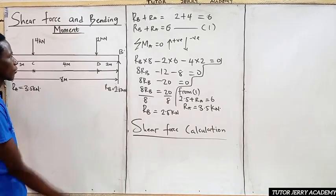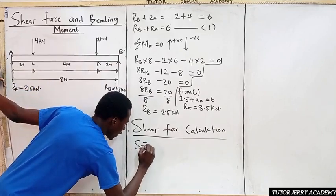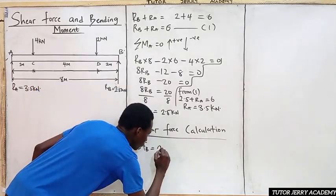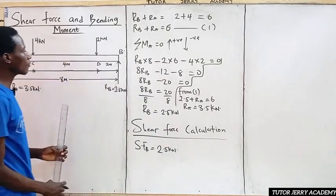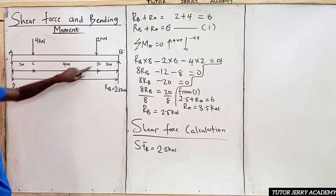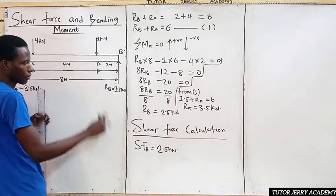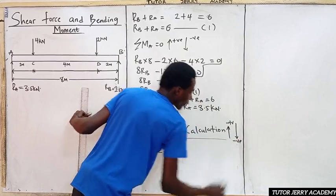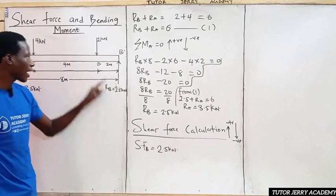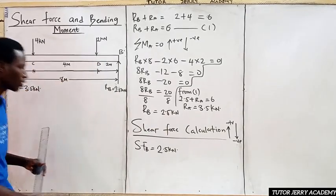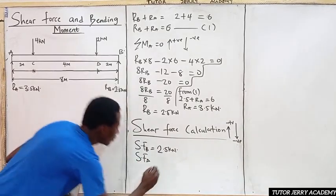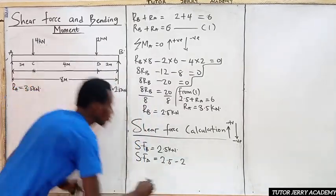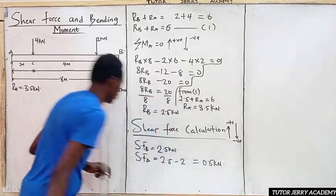For the shear force calculations, we consider upward forces as positive and downward forces as negative. Our shear force at B equals the reaction at B, which is 2.5 kilonewtons. For shear force at D, it will be 2.5 minus 2, so the shear force at D equals 0.5 kilonewtons.